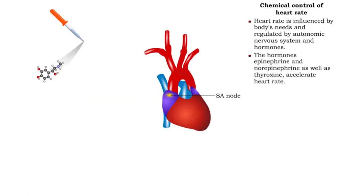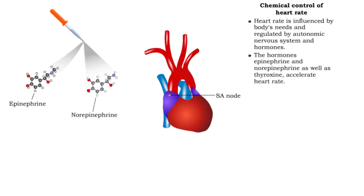The hormones epinephrine and norepinephrine secreted from the adrenal gland as well as thyroxine accelerate heart rate.